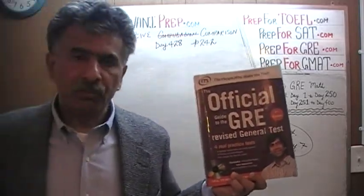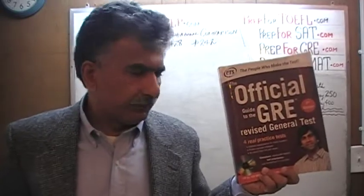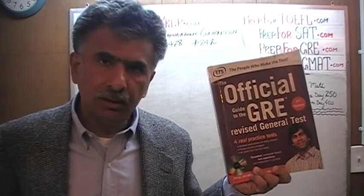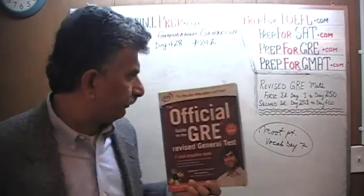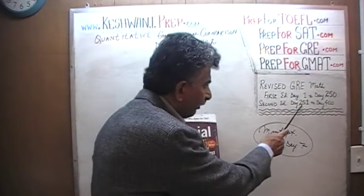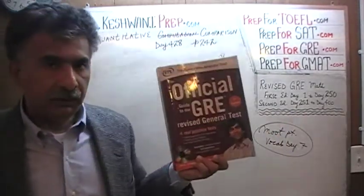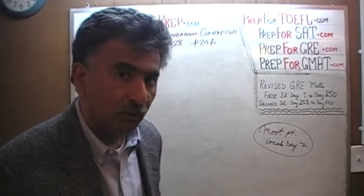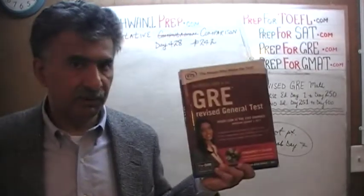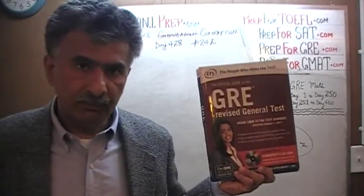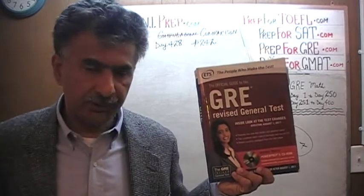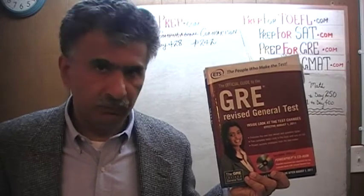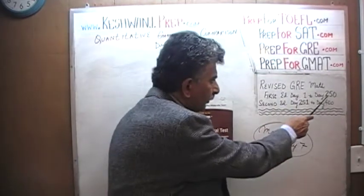We are almost finished doing all the math problems from this book. If there is something that gives you trouble, you will find a solution to those problems from day number 251 through 400. This book contains almost all the same problems, appearing on exactly the same page numbers as in the first edition of the revised GRE. If you are interested in the original solutions, you will find those from day number 1 through 250.